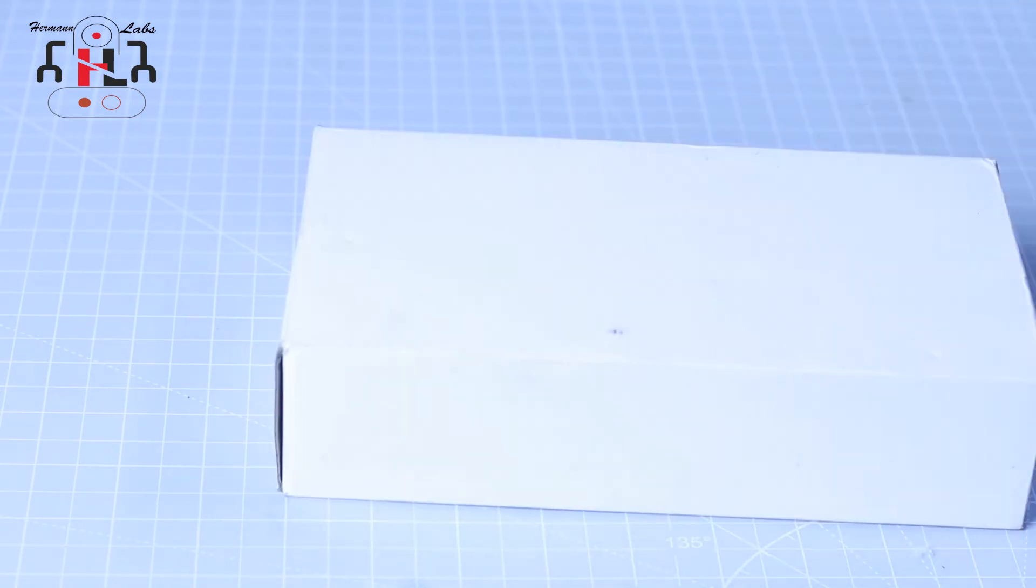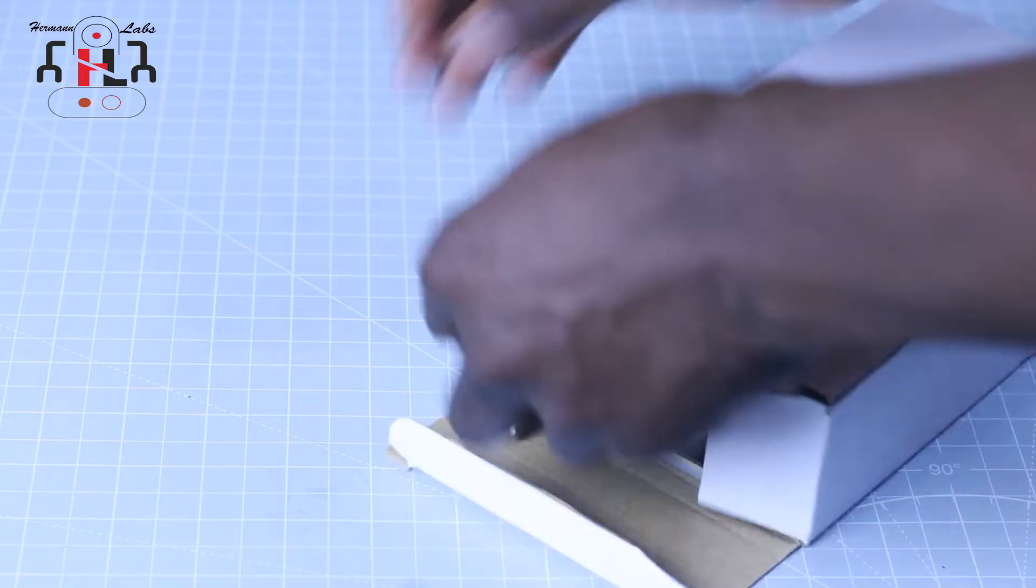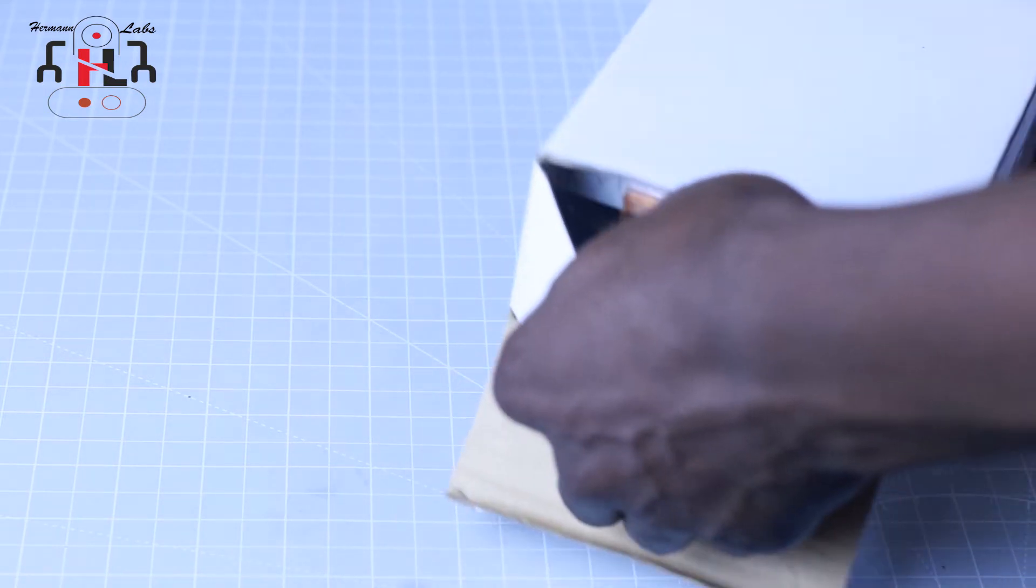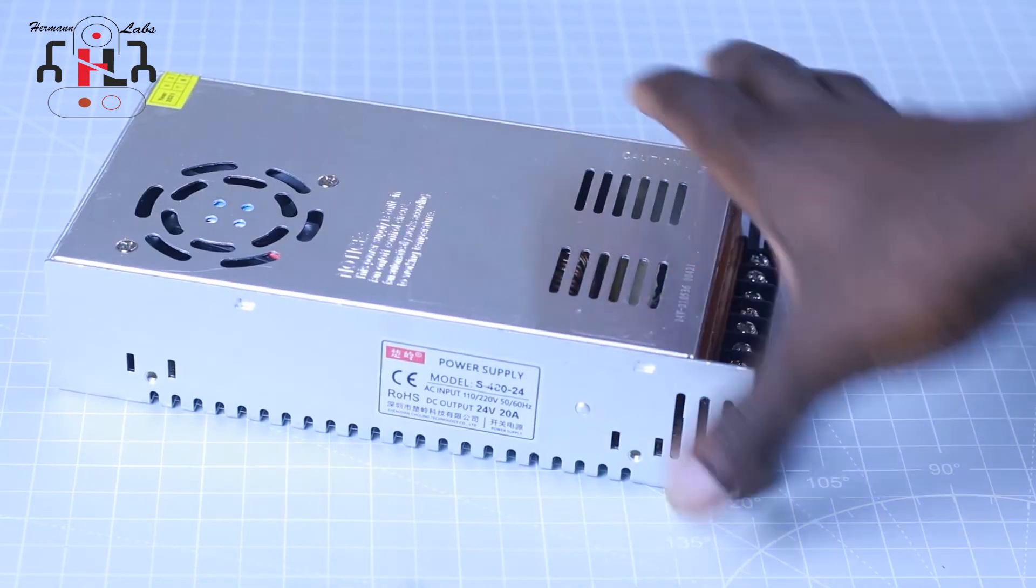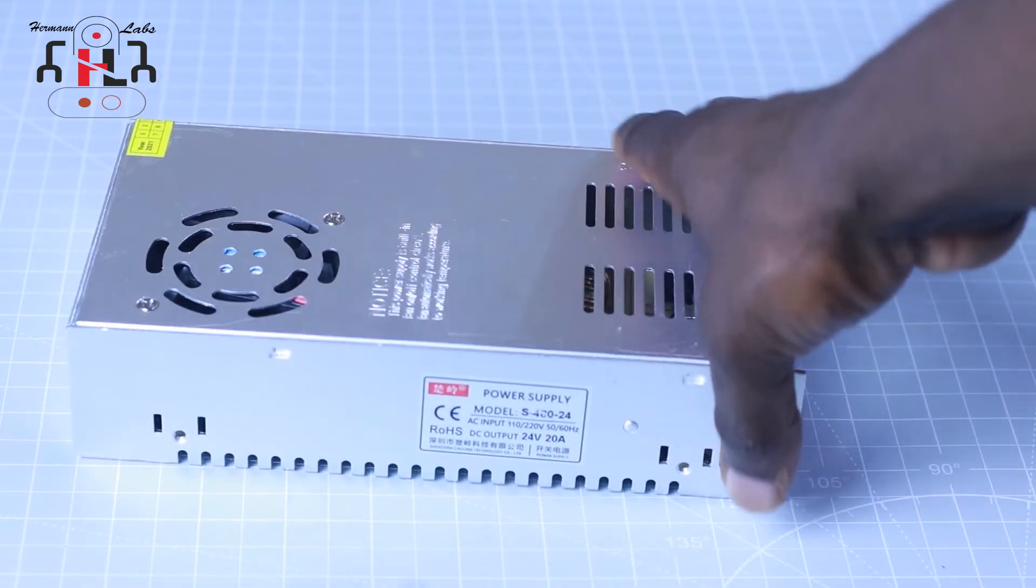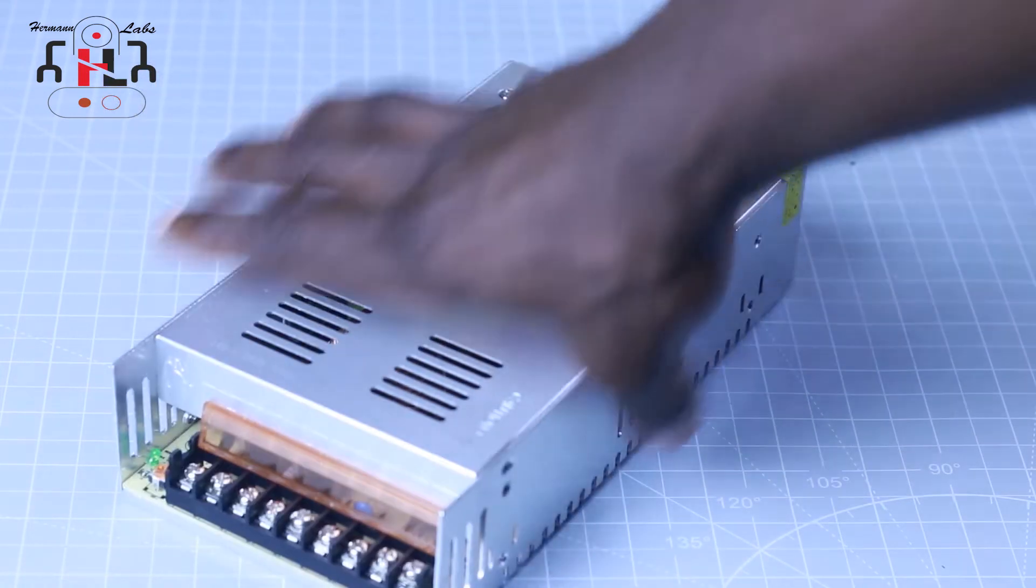The second module is the DC power supply itself. Before getting this module, we need to keep in mind that its output should be maximum of 120 volt as required by the digital controller. If not, we run the risk of destroying the digital controller.